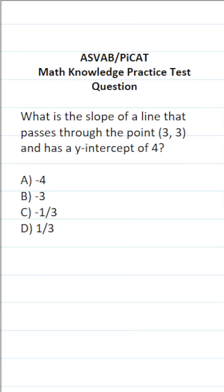This math knowledge practice test question for the ASVAB and PICAT says, what is the slope of a line that passes through the point (3, 3) and has a y-intercept of 4?